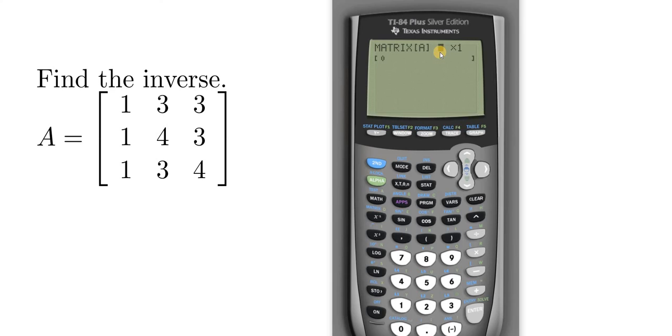Now we have to enter what's called the dimension of the matrix. The dimension is a number that tells us the rows and columns. The first number is the rows. We have 1, 2, 3 rows, so I'll hit 3. Then I'm going to hit the arrow key and then it has 1, 2, 3 columns so I'll hit 3.